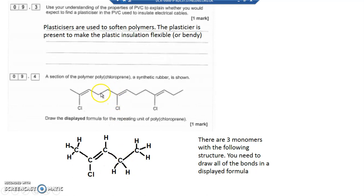So I've drawn that section there and I've drawn the displayed formula. So rather than skeletal, I've drawn displayed with all of the bonds and the H's showing. It's important—it mentions here you need the displayed formula for the repeating unit, so it's important to draw all the bonds in.